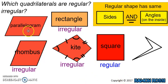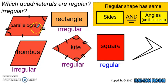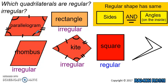Now let's look at the parallelogram. It doesn't have all its sides the same length — this side looks the same as this side, and these two look the same, but they're not all the same size — so it must be irregular. Checking the angles: this one is acute, this one looks about the same, but these two here are obtuse. The angles are different from each other, which is another reason why this shape is irregular.